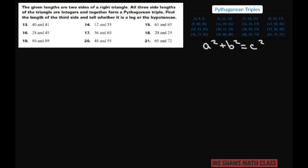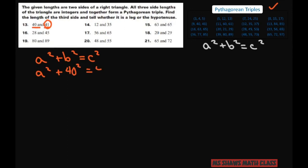Here are some of our Pythagorean triples to make it a little easier. Especially if the numbers are close, we're just going to look at a² + b² = c². When the numbers are really close like that, this is probably your hypotenuse. So let's do that: a² + 40² = 41².